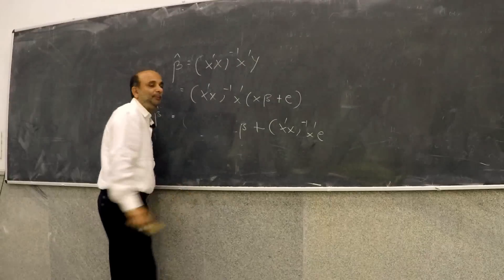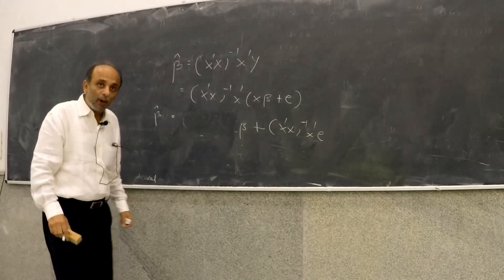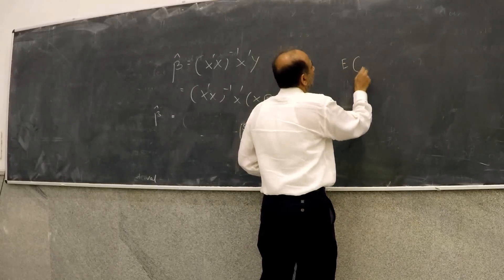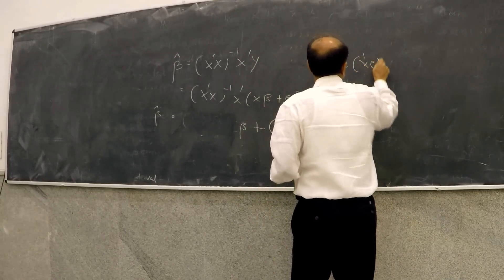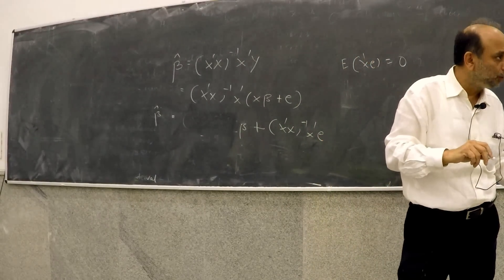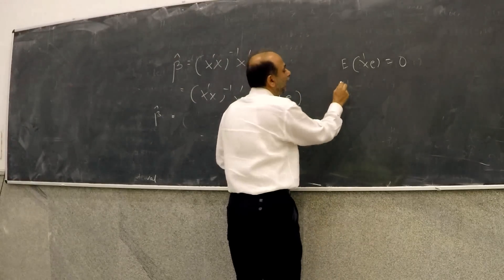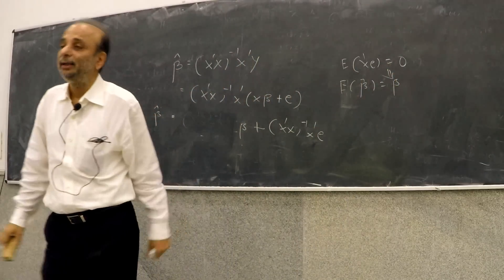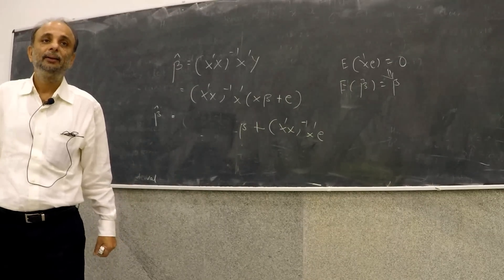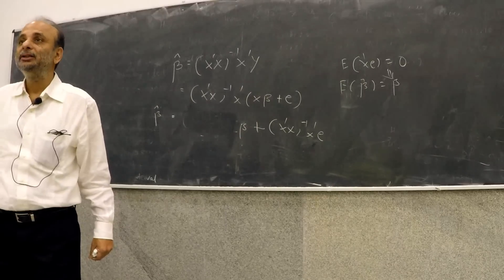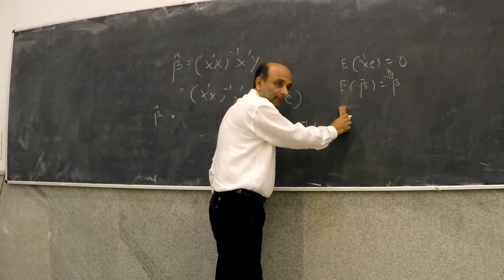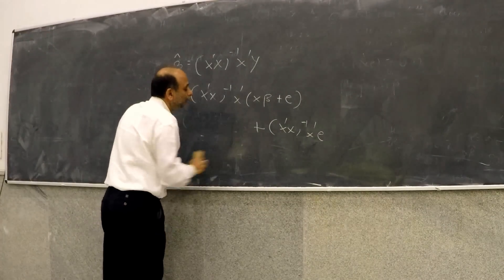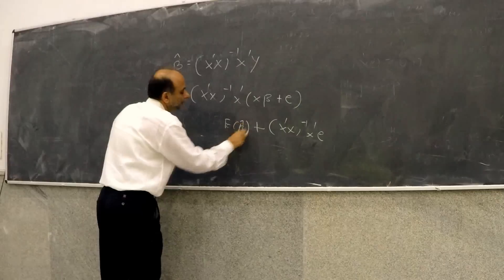Now, we also know that if expectation of X'e equals zero, then it can be shown that expectation of beta hat equals beta — that is, beta hat is unbiased. We will make this assumption, and I will replace beta by expectation of beta hat going forward.